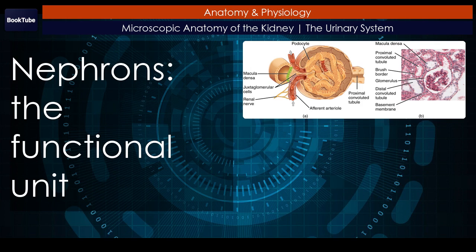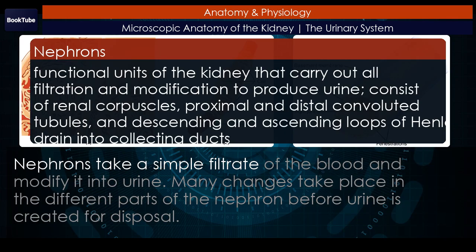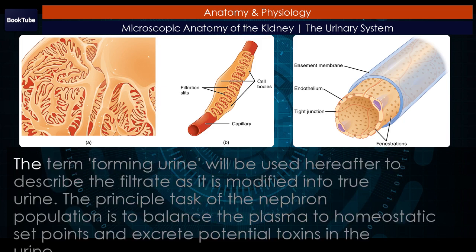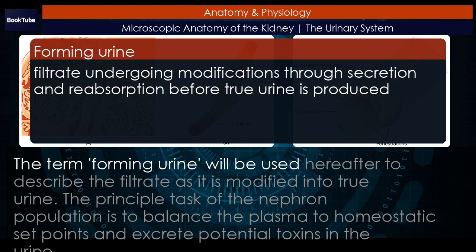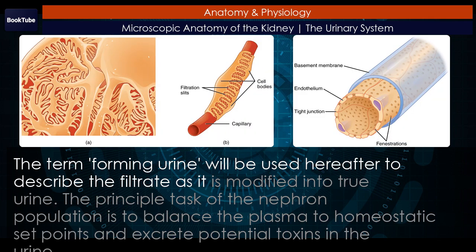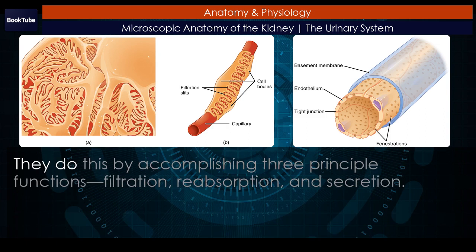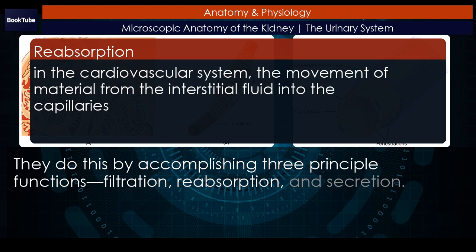Nephrons: the functional unit. Nephrons take a simple filtrate of the blood and modify it into urine. Many changes take place in the different parts of the nephron before urine is created for disposal. The term 'forming urine' will be used hereafter to describe the filtrate as it is modified into true urine. The principal task of the nephron population is to balance the plasma to homeostatic set points and excrete potential toxins in the urine. They do this by accomplishing three principal functions: filtration, reabsorption, and secretion.